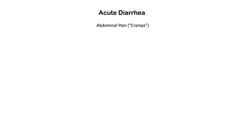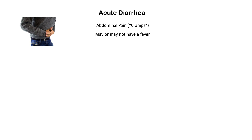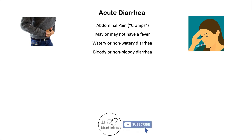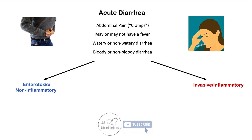What are some of the symptoms of acute diarrhea? One is abdominal pain or cramps, which can be diffuse or localized. We may or may not see a fever, and the diarrhea can be watery or non-watery, bloody or non-bloody. To distinguish causes, we break them down into two categories: enterotoxic or non-inflammatory, and invasive or inflammatory — each with different pathogenic mechanisms.